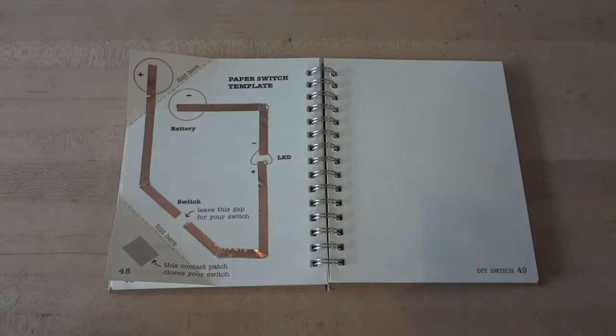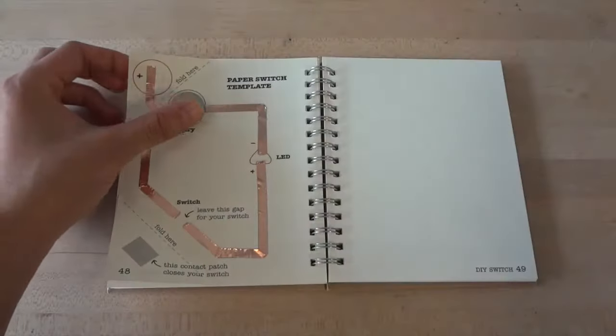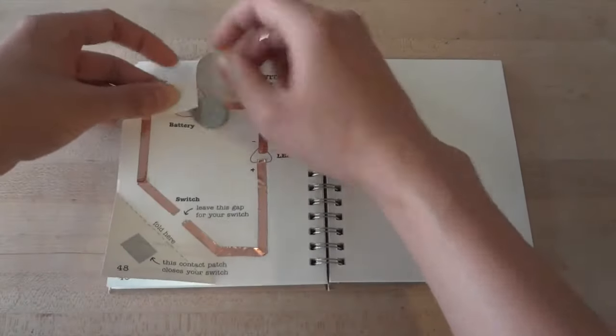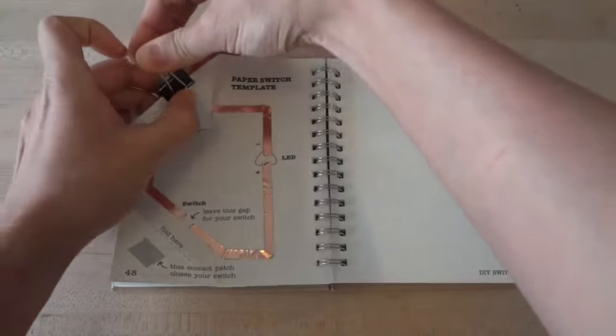Next, fold the upper left corner of your page to create a battery holder, and place your battery plus side up in your holder and clip it in place with the binder clip.